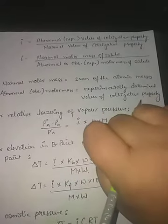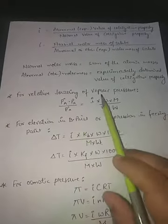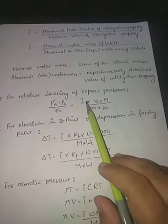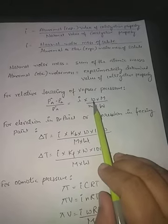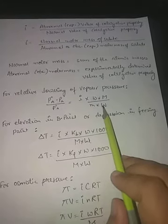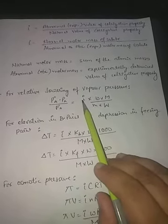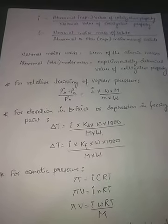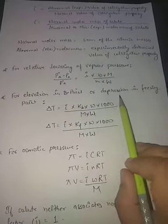Suppose we have to calculate the relative lowering of vapor pressure. We know it equals (P°A − PA) / P°A = mole fraction of solute, where mole fraction = (W × M) / (M × W). If the substance is associating or dissociating, we will first find the value of i and then multiply this expression by i.